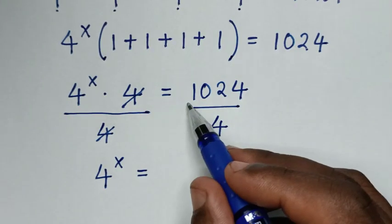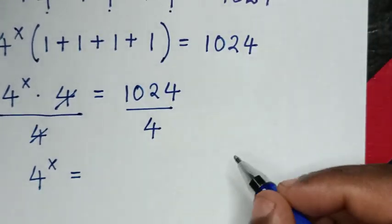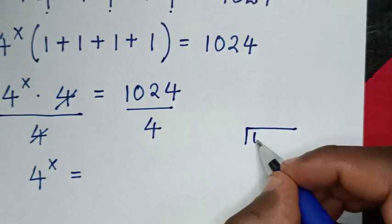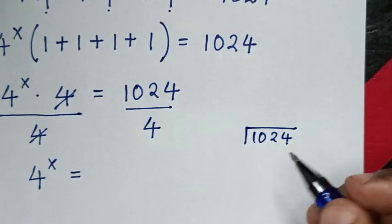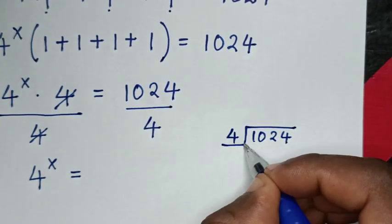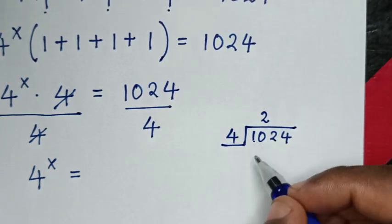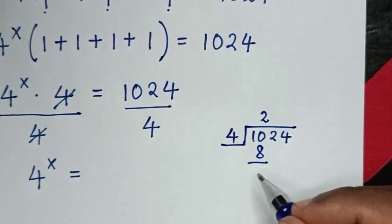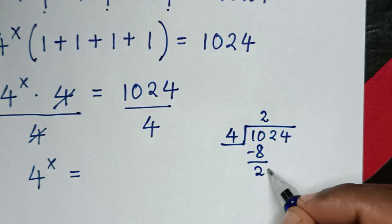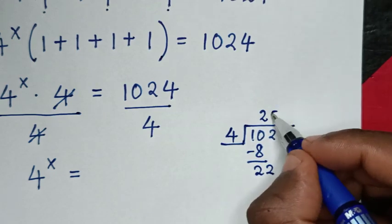So let's divide it by long division: 1024 divided by 4. From here, 2 times 4 is 8, then it will be left with 2, drop to 22.